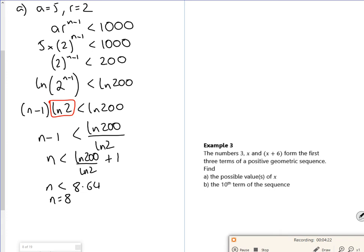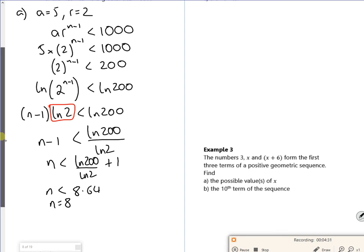So the 8th term is less than a thousand. The 9th term is more than a thousand. That's what we're saying. So that's part A done.